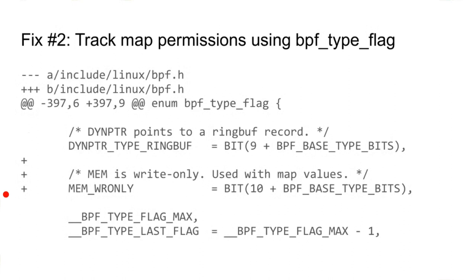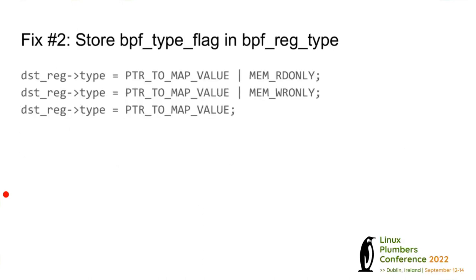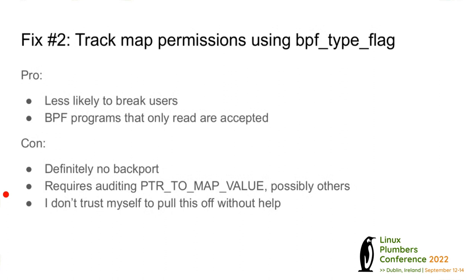The more sophisticated fix uses BPF type flags, which let you attach metadata to types in the verifier. There's already a read-only type; we could add a write-only type. We would track a new register type — read-only map value, write-only, or read-write — and the verifier does the right thing based on what the helper is trying to do. The upside is it's less likely to break users and can express all valid BPF programs. The downside is it's unlikely to be backportable, requires auditing all places that pointer-to-map-value is used, and is quite subtle.